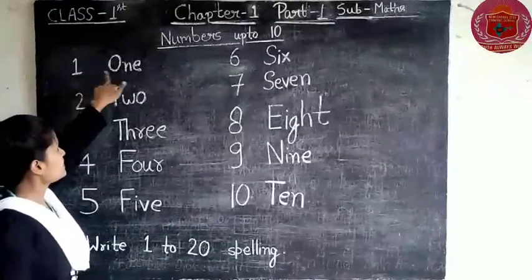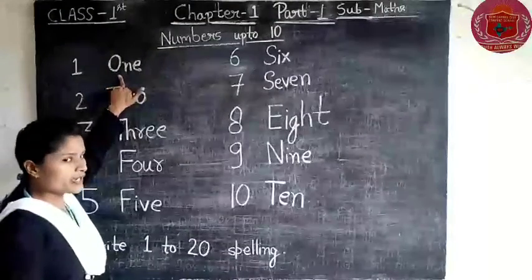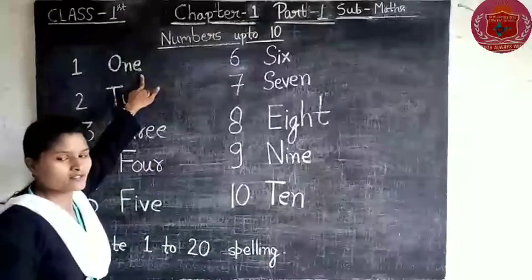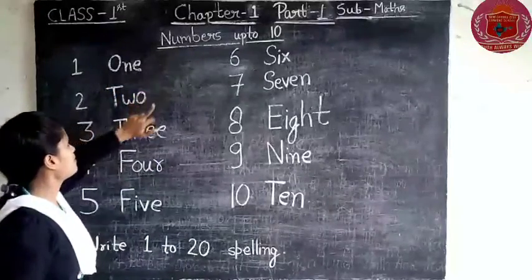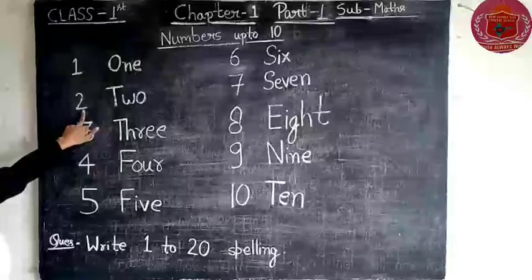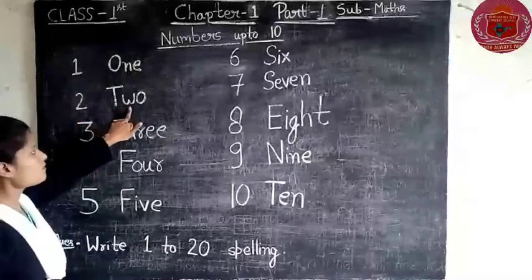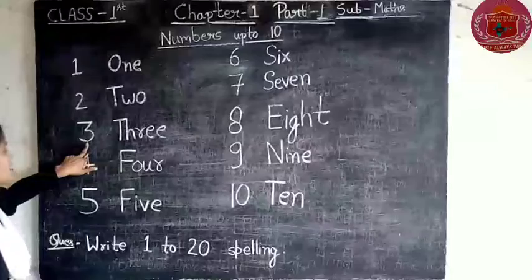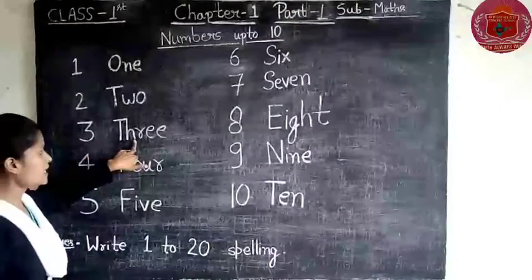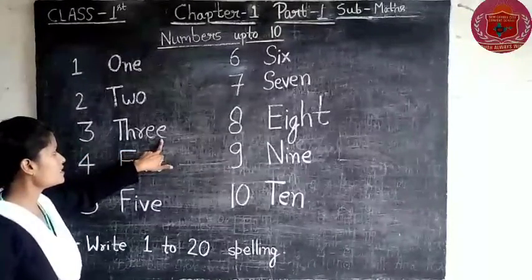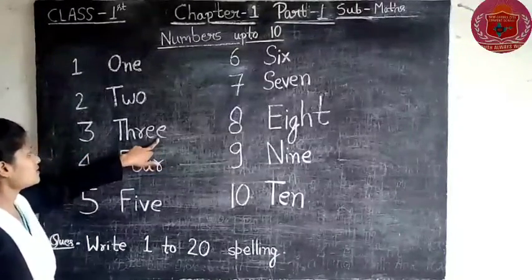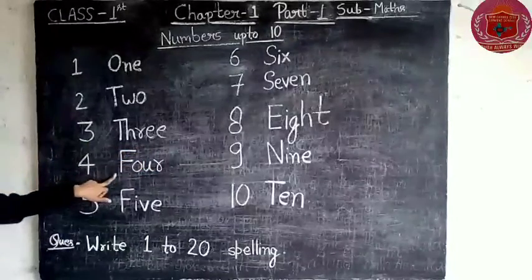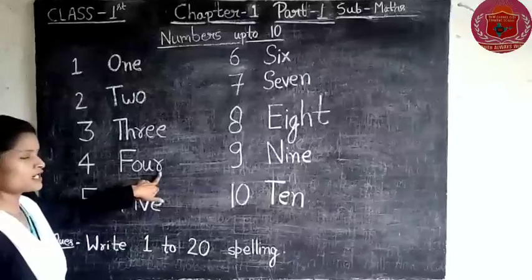The number 1 is written as O-N-E. Next is 2, written as T-W-O. Next is 3, written as T-H-R-E-E. Next is 4, written as F-O-U-R.